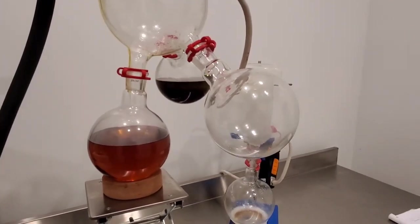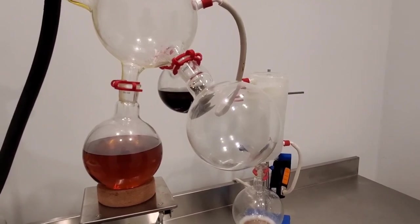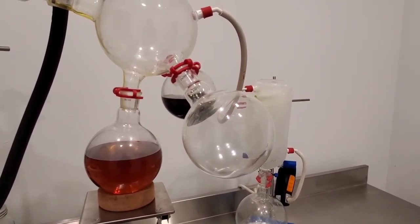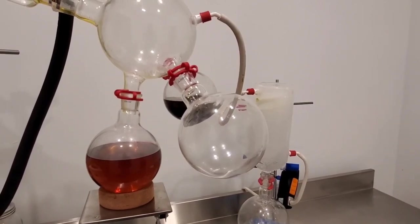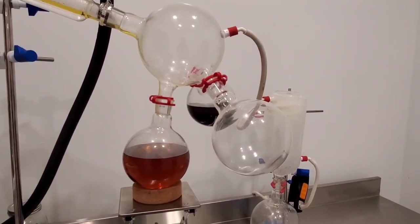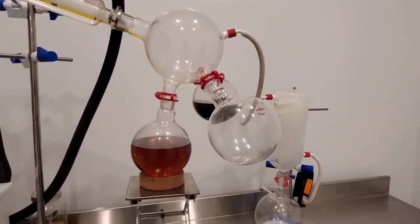In the third flask, which we haven't started using yet, we'll use that at the end, we're going to collect our tails. These also contain some cannabinoids, but you're starting to get a really dark color, which you really don't want. And you're starting to collect a little bit more of the undesirables that are left behind in the crude oil.